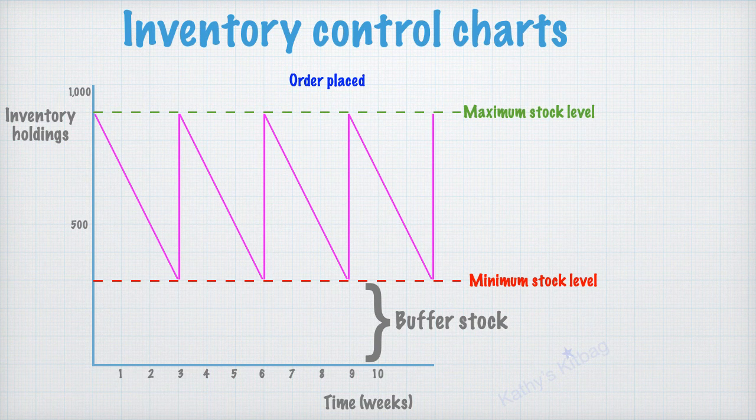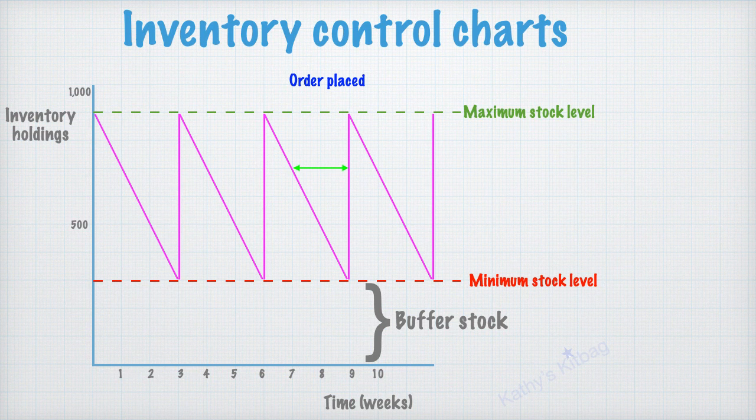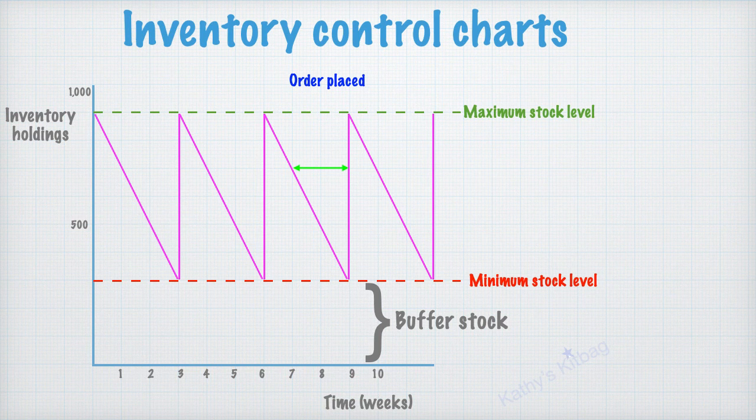So what we need to do is then plot that on our chart. Let me plot it on any of these different periods where stock's coming in. But you can see here, so if I want my stock in at week nine with a two week lead time, I need to order at week seven.